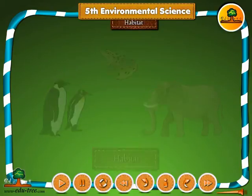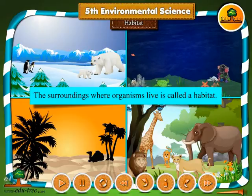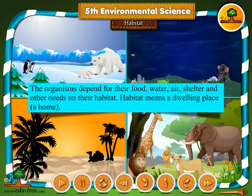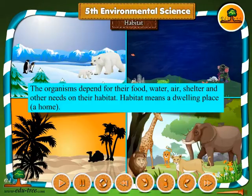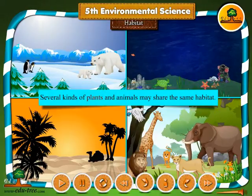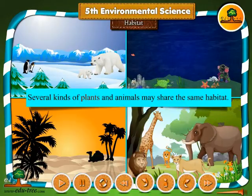Habitat. The surroundings where organisms live is called a habitat. The organisms depend for their food, water, air, shelter and other needs on their habitat. Habitat means a dwelling place, a home. Several kinds of plants and animals may share the same habitat.